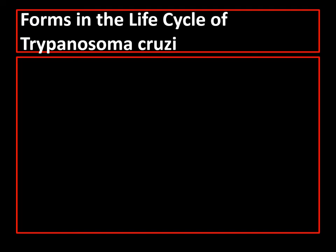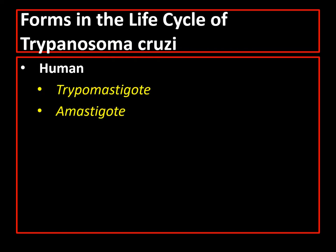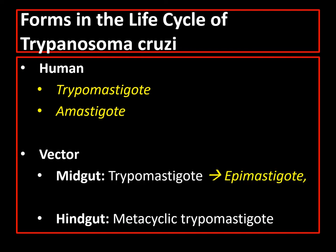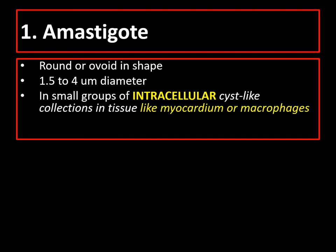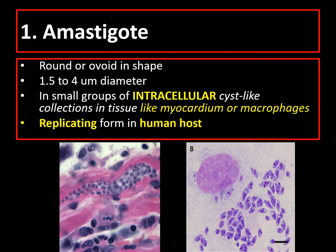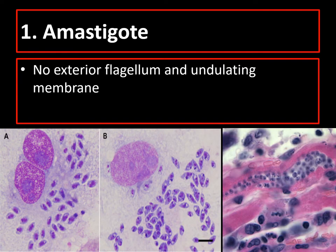In the life cycle of Trypanosoma cruzi, there are only three forms: amastigote and trypomastigote, which are found in humans, and epimastigote, which is found in the vector. Amastigote is round or ovoid in shape, occurring in small groups of intracellular cyst-like collections in tissue like the myocardium or macrophages, among other tissues. This stage is known to be the replicating form in the human host. There is no exterior flagellum and undulating membrane, so the movement of this parasite is just rotation.